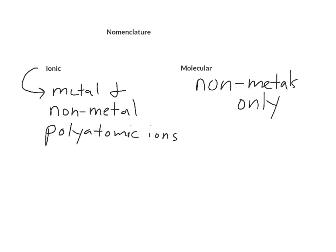ionic compounds must have a metal and a non-metal in it, or be composed of polyatomic ions. And molecular compounds are non-metals only.